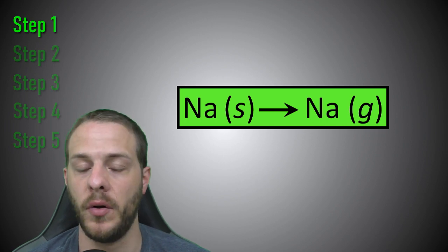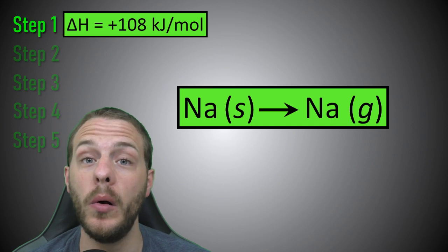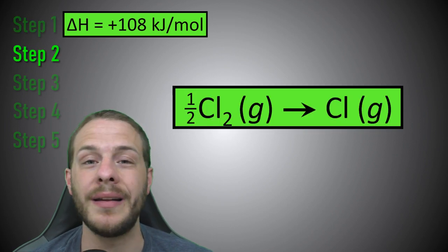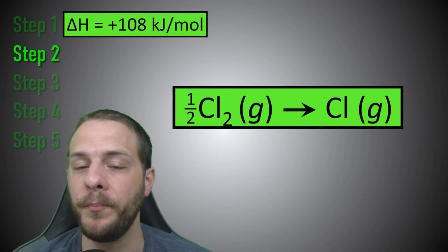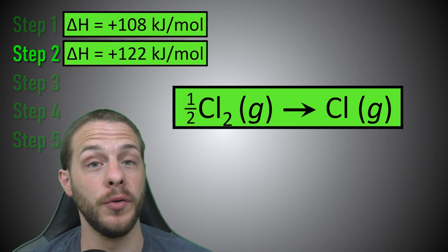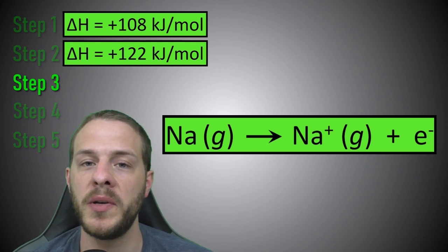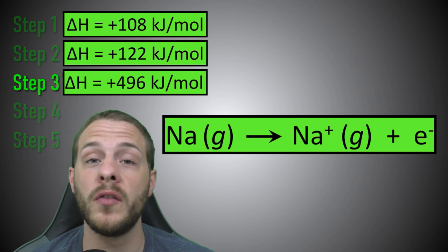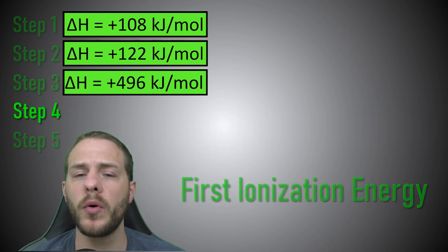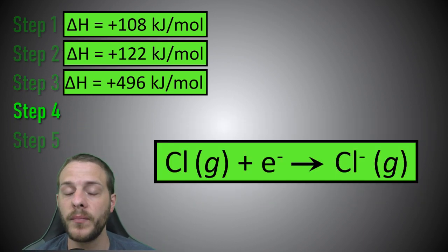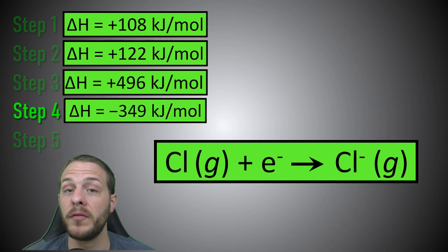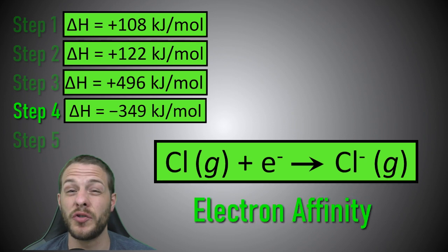Let's turn our attention back to the sodium chloride example. We can break down the formation of sodium chloride into five steps, four of which have known, well-documented enthalpy changes. Step one is the sublimation of solid sodium into gaseous sodium, which has an enthalpy change of positive 108 kilojoules per mole. Step two is the dissociation of the bond between two chlorine atoms in a diatomic chlorine molecule to give one chlorine atom, with an enthalpy change of positive 122 kilojoules per mole. Step three is the removal of an electron from a sodium atom to yield a sodium ion, with an enthalpy change of positive 496 kilojoules per mole — also referred to as the first ionization energy of sodium. Step four is the addition of an electron to a chlorine atom to yield a chloride ion, with an enthalpy change of negative 349 kilojoules per mole, also called the electron affinity of chlorine.